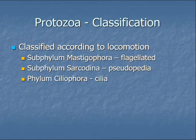For pseudopodia, the sarcodina — amoeba — are the ones that move that way. They will extend a part of the cell and the rest of the body follows. Cilia and flagella are the other modes of locomotion.